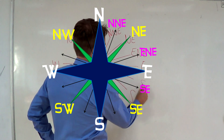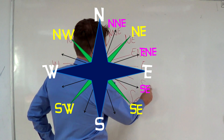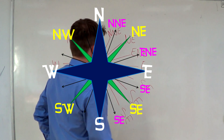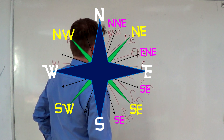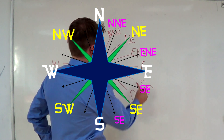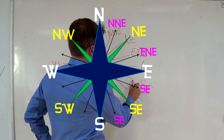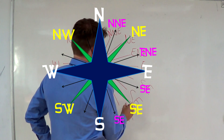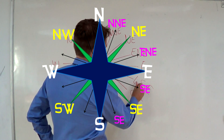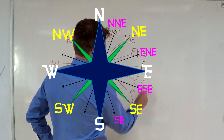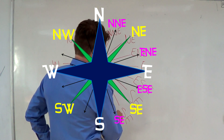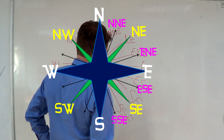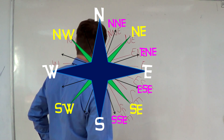Let's first write SE and SE at these two points. This area here is closer to east than it is to south, so we say east-south-east. This direction here is closer to south, so we say south-south-east.